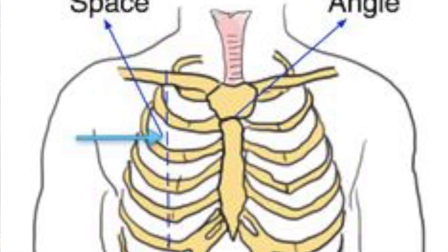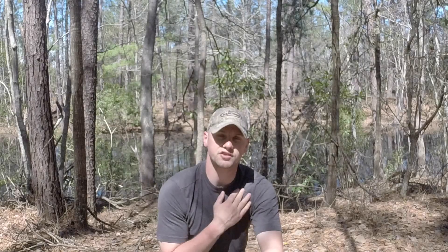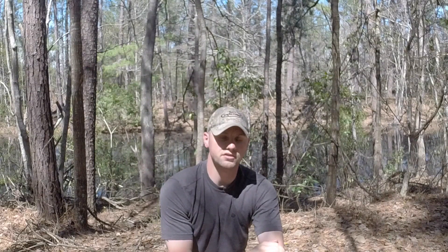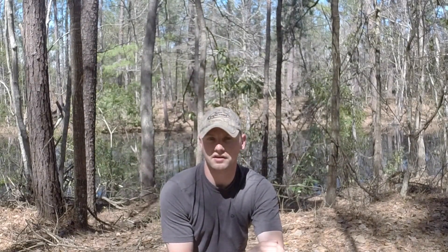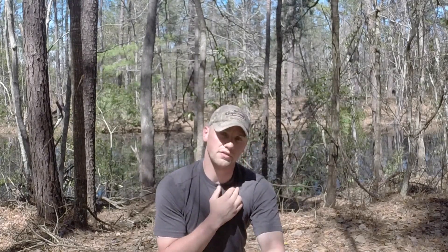We need to get this needle in the right place: the second intercostal space, between the second and third rib coming down from the collarbone. It's harder to find on bigger people — whether fat or muscle — and you may have to press in hard. If the patient is conscious, they'll fight you because it hurts to dig your fingers in and press down hard to find those ribs.